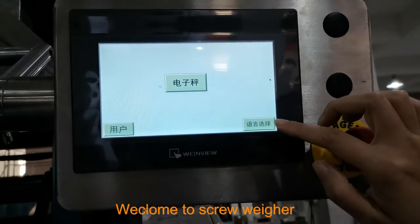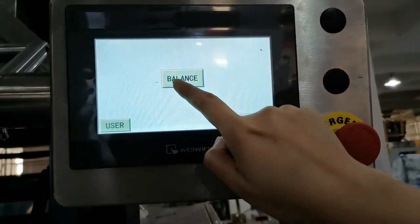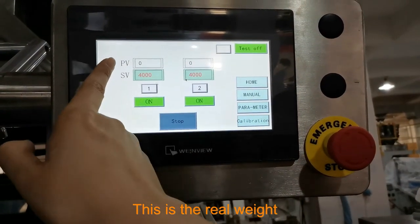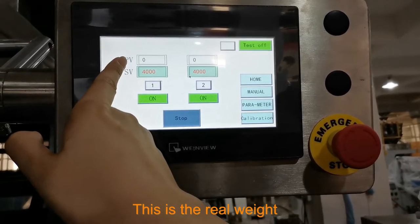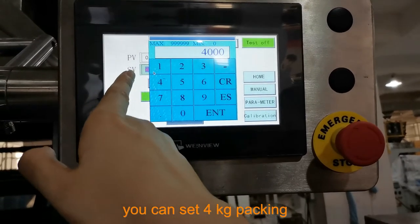Okay, now this is the scale where we can choose the language and enter the balance. Here we can see the real weight and the target weight you can set.